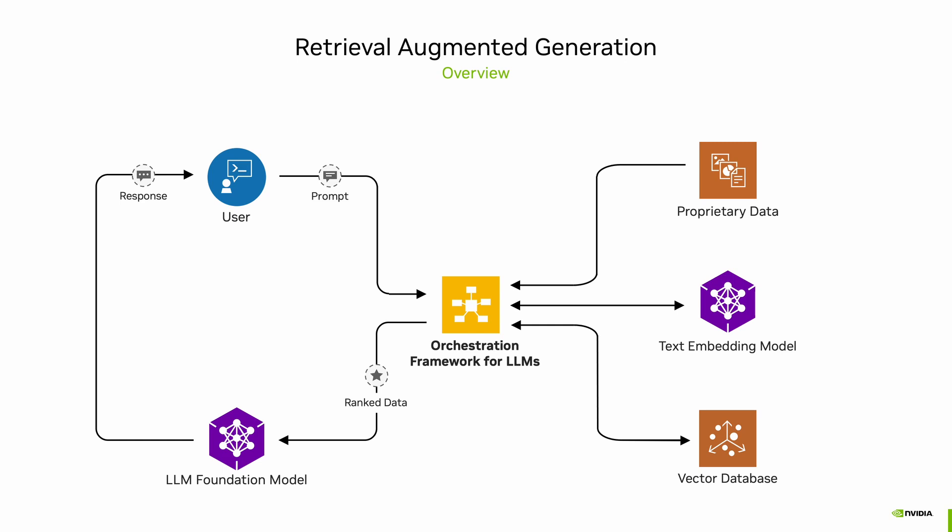The second step is when you are running your application in real time. In this step, the prompt from the user is used to do a semantic search in the vector database to find the relevant documents to the query. These documents, along with the prompt, are passed to the foundation model, which in turn formulates a response for the user.